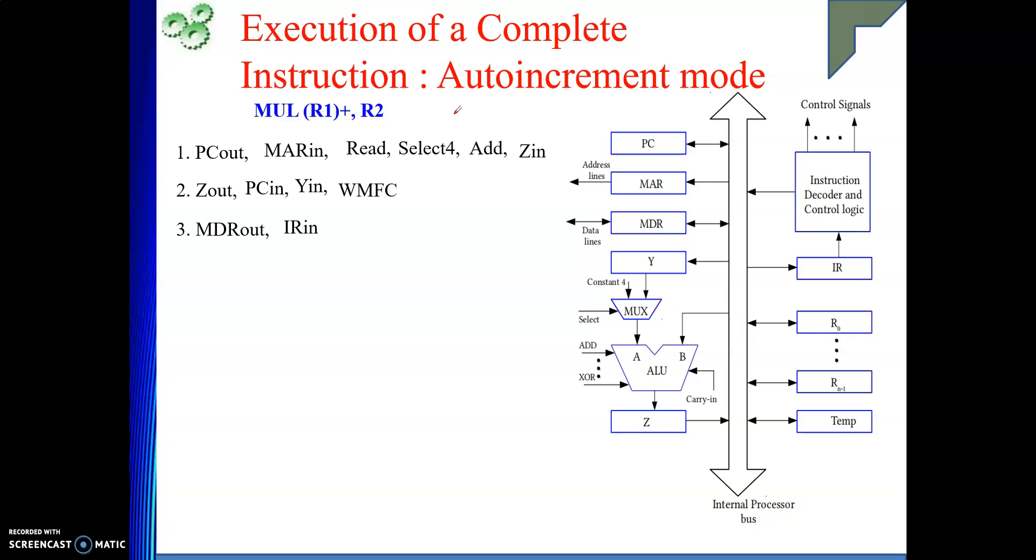Now, instruction is decoded. After that, we got to know we need to get one of the operand from memory. Where is the address? In R1. From R1 to where to I need to transfer the address? MAR. R1 out, MAR in. That means address is given to memory. Then keep the read signal. This is done. And then what I will do? In this step, can I do something more? I will do. Whatever is possible to do before my data comes from memory.